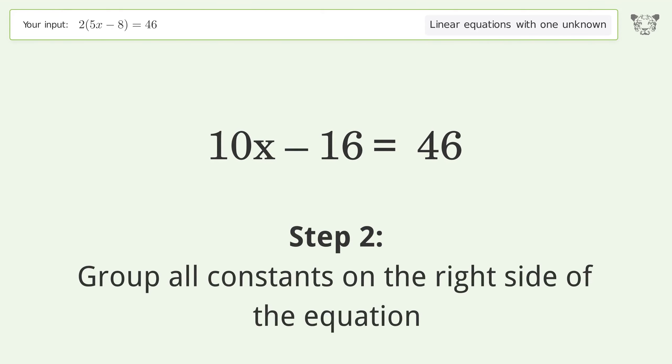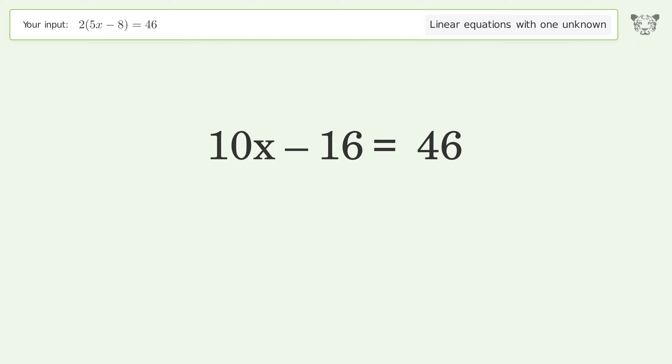Group all constants on the right side of the equation. Add 16 to both sides. Simplify the arithmetic.